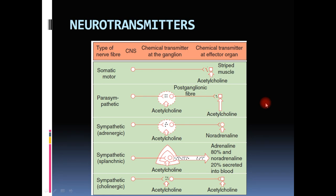Any neuron secreting acetylcholine is called a cholinergic neuron, and any neuron secreting noradrenaline as its neurotransmitter is called an adrenergic neuron. Now let us see what neurotransmitters are used by the various divisions of the autonomic nervous system.